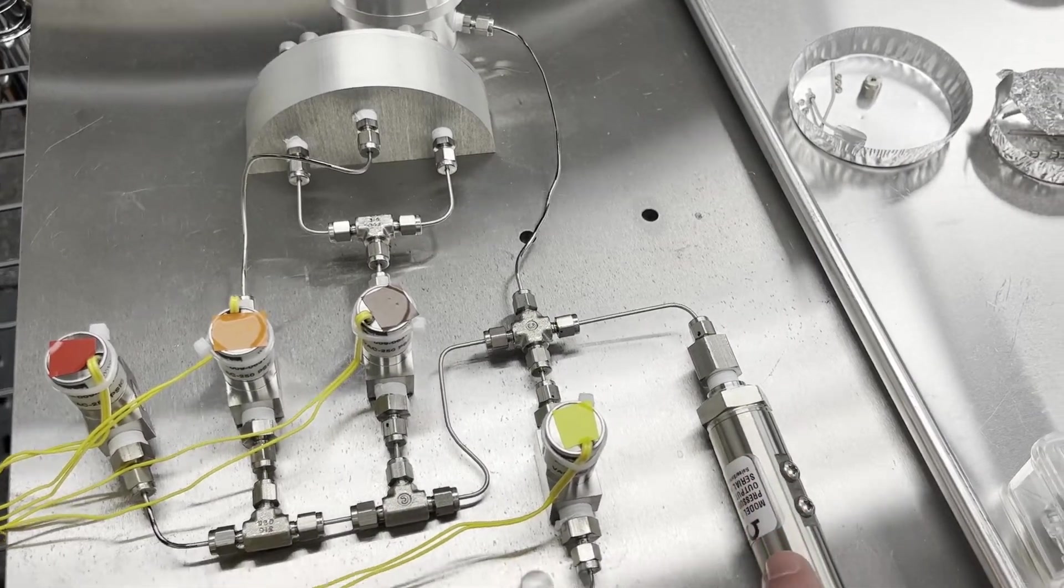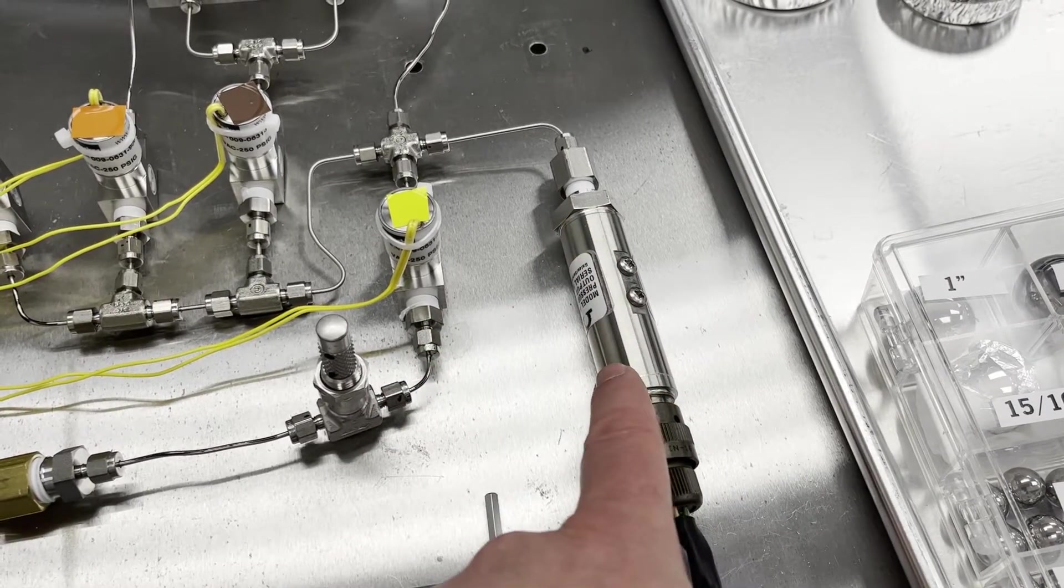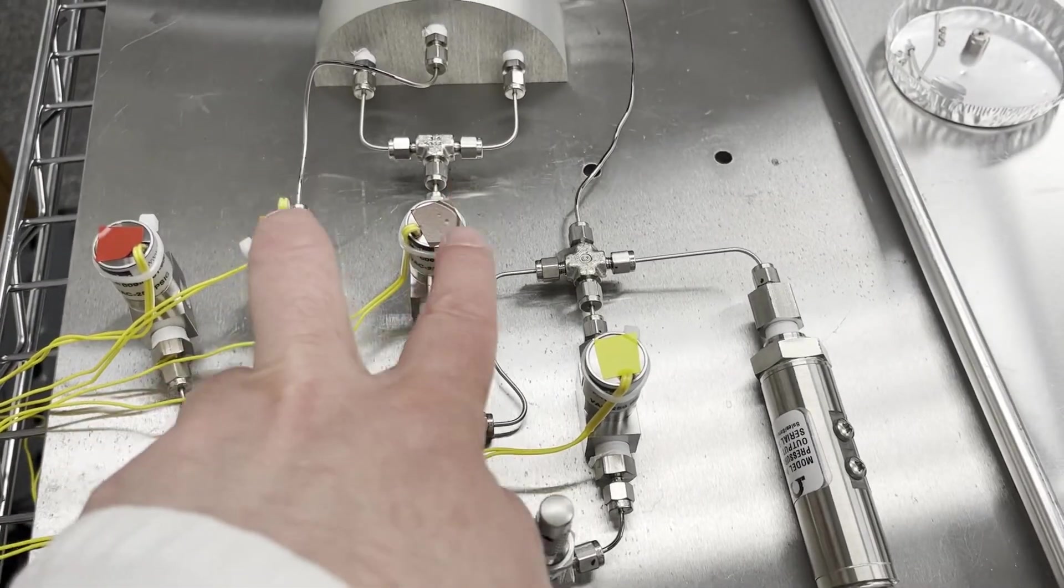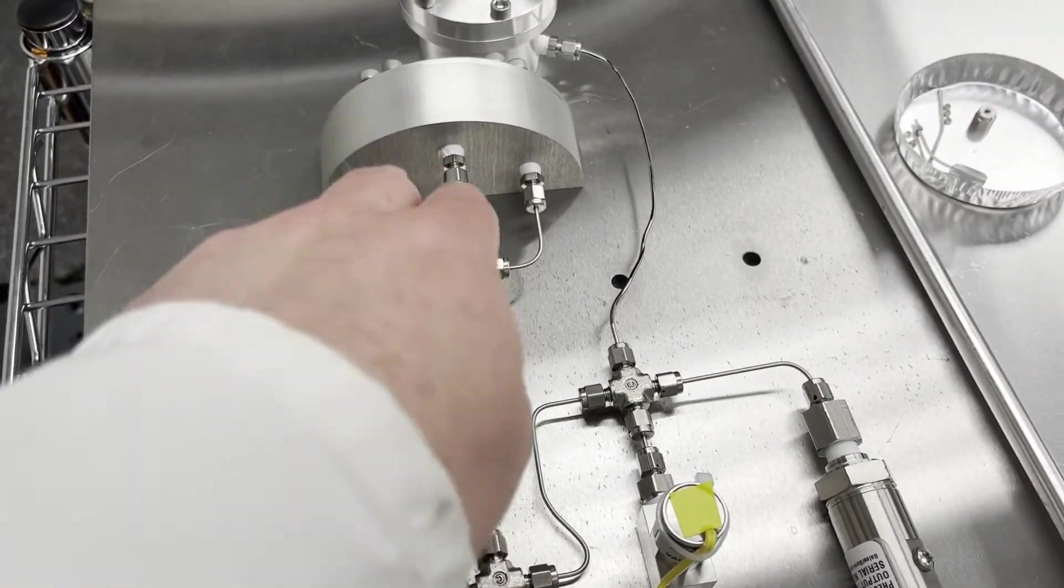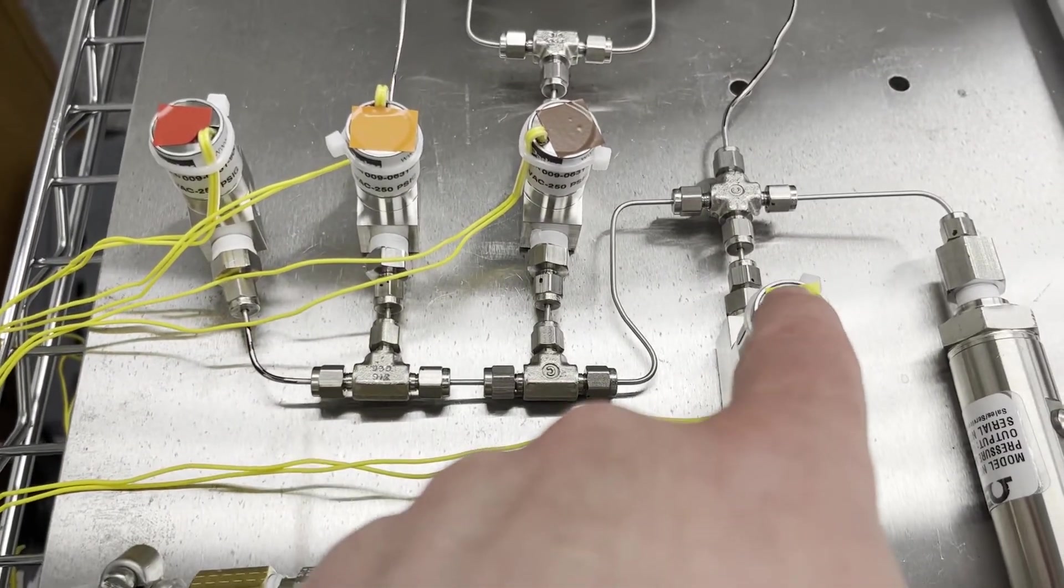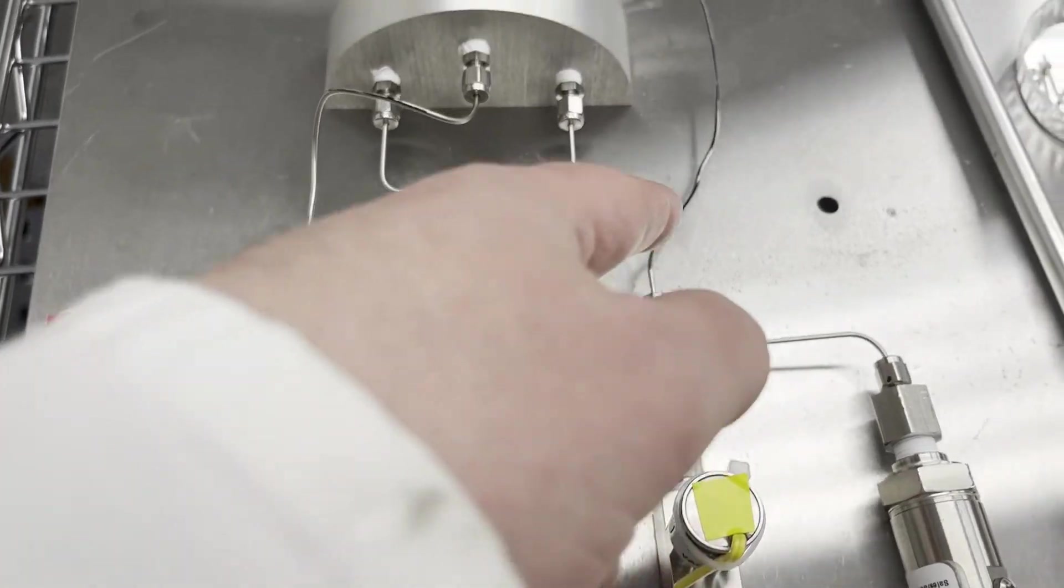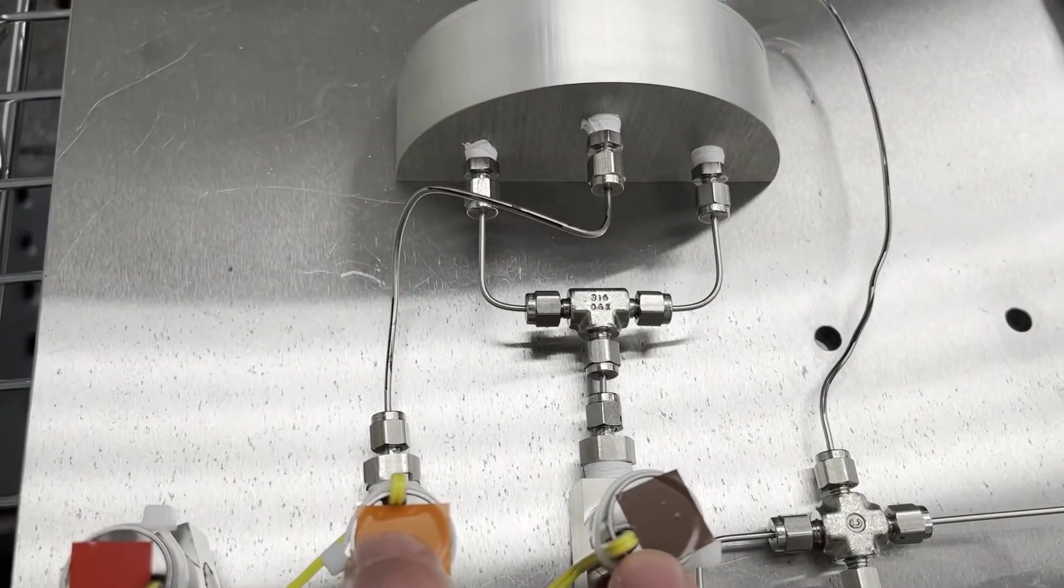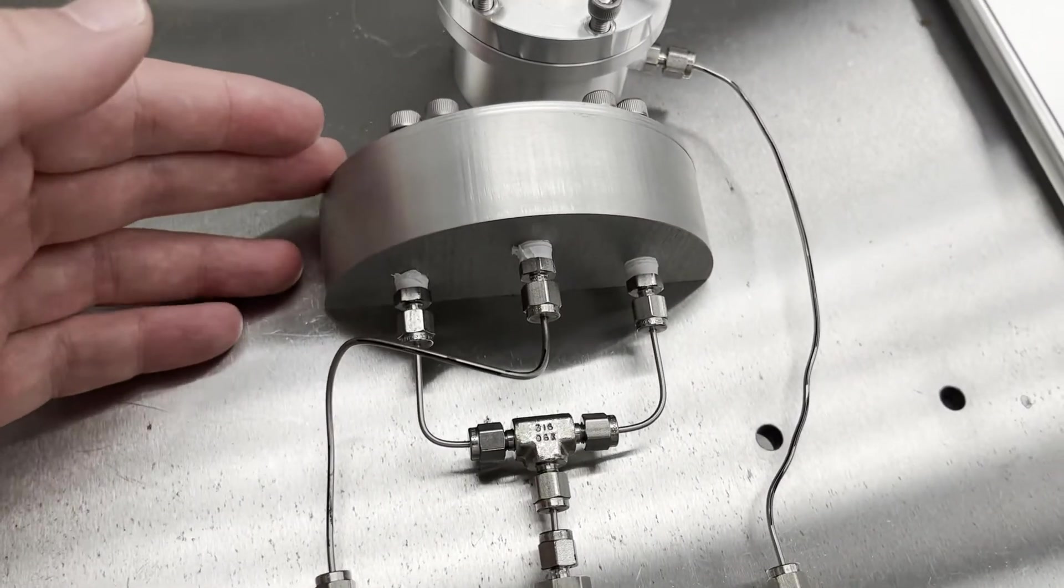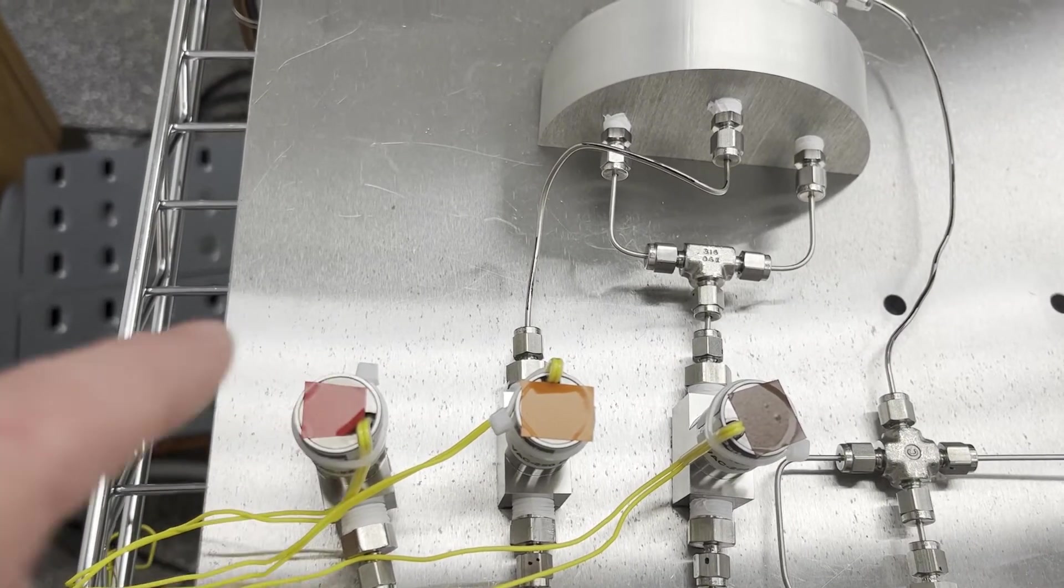This part is the pressure transducer. It reads the pressure of the gas in the system and sends the data to the computer. These are solenoid valves. They're computer-controlled to open and close, allowing gas to flow. This input valve opens when we do the initial pressurization. These expansion valves open to allow the gas to spread out to greater volume during the expansion phase. And finally, this is the output valve that releases the gas at the end of the measurement.